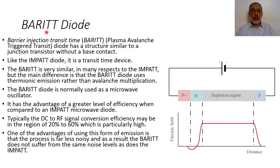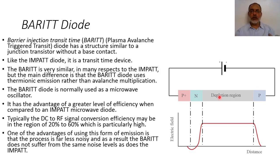The BARITT diode is similar to the IMPATT diode in that it depends on the transit time. Both the BARITT diode and the IMPATT diode depend on the transit time of the carriers inside the diode. According to the transit time, we can convert this diode into a negative differential resistance device, and if we do so, we can use it as an oscillator or an amplifier.